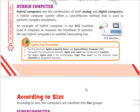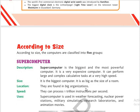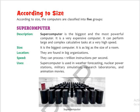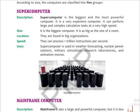Now moving to the second classification: according to size. The first is the supercomputer. As the name suggests, it is super. A supercomputer is the biggest and most powerful computer. It is very expensive and can perform a trillion instructions per second. Its size is very big — as big as a room.